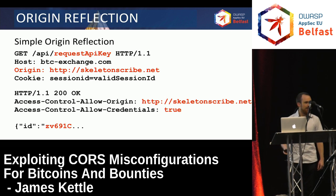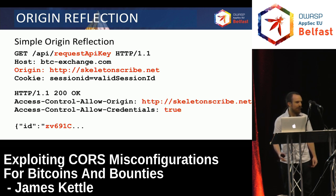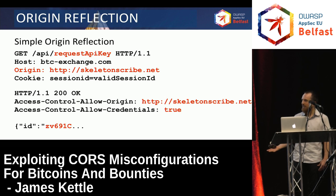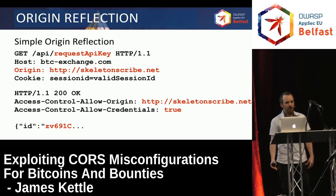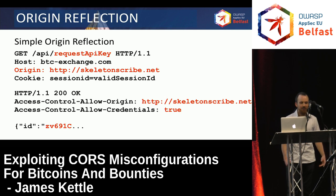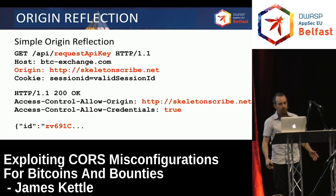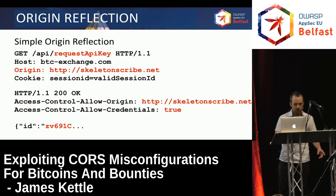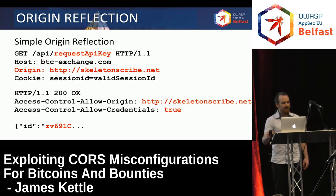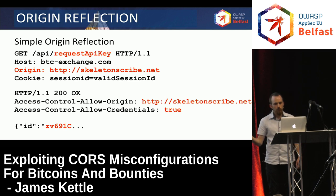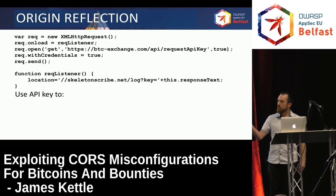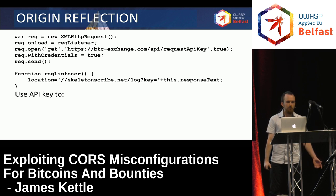The simplest thing that can go wrong when you dynamically generate the allow-origin header is that you just reflect whatever origin header you get given, which is surprisingly common for such a crazy behavior. I very quickly found a Bitcoin exchange that had this behavior. So if we look at the top request, this says: hi, I'm skeletonscribe.net, can I access this user's private API key? And this exchange says yes, skeletonscribe.net, you sound trustworthy — have this user's private API key. And that means with a tiny bit of trivial JavaScript, I can grab anyone's private API key.